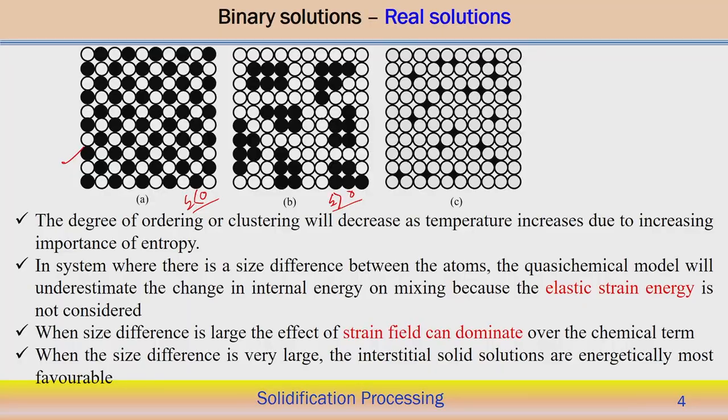When there is a size difference between atoms, the quasi-chemical model underestimates the change of internal energy, because when we estimated the internal energy — the bonding energy between atoms — we assumed atoms A and B to be of almost similar size or similar structure. But if there is a size difference, it actually underestimates the actual bond energy of the internal energy on mixing, because the elastic strain energy is not considered.